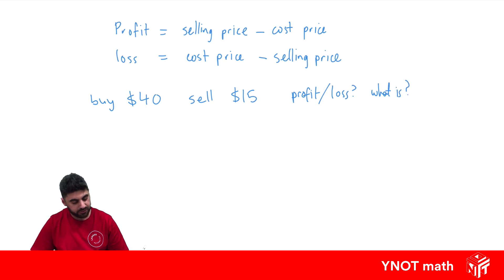Well, if we're selling it for less than what we paid for it, this is going to be a loss. So to find that loss, we can do our cost price, so what we bought it for, minus our selling price, which was $15, and this is going to give us $25. So we've made a $25 loss.